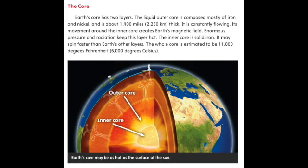The core. Earth's core has two layers. The liquid outer core is composed mostly of iron and nickel and is about 1,400 miles, or 2,250 kilometers, thick. It is constantly flowing. Its movement around the inner core creates Earth's magnetic field. Enormous pressure and radiation keep this layer hot. The inner core is solid iron. It may spin faster than Earth's other layers.